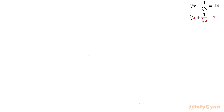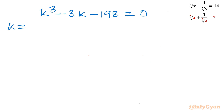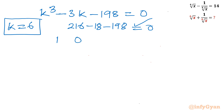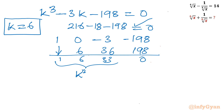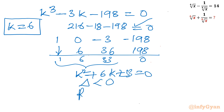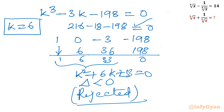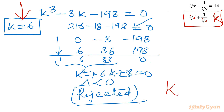This is the same cubic equation as in Method 1. Using the rational root theorem, k equals 6 satisfies it: 216 minus 18 minus 198 equals 0. Synthetic division gives the quadratic factor k squared plus 6k plus 33 equals 0, whose discriminant is negative, generating only complex solutions which we reject. So the only real solution is k equals 6, confirming our final answer.